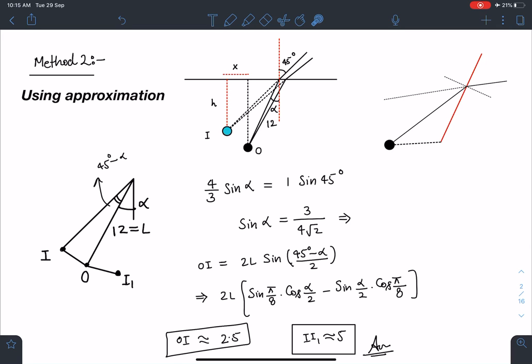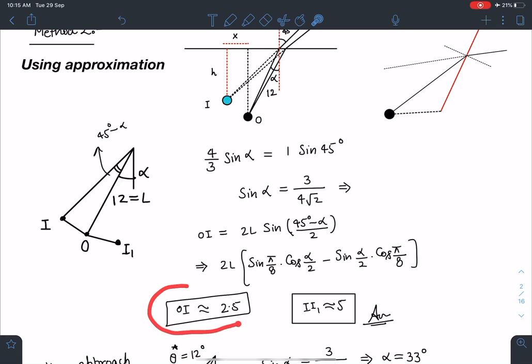So OI actually I can write as 2L sin(θ/2) where θ is (45° - α)/2. This here I can drop this perpendicular. This is nothing but 2L sin((45° - α)/2). When you simplify this and you know all these values here. So this OI comes as roughly 2.51 kind of value approximately. I can write this II₁ will be double of this. So the answer comes very close to 5.